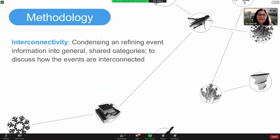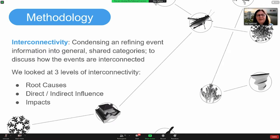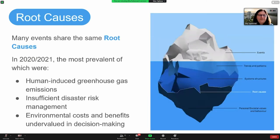And then we looked at the interconnectivity among the events, considering the root causes, but also direct and indirect influences and impacts. When we cluster the root causes, we've worked out large categories which occurred in different events. And the three which occurred most often were human-induced greenhouse gas emissions, so back to climate change. But also our inability to design disaster risk management in a way which helps us to increase capacity to respond and to prevent disasters from happening.